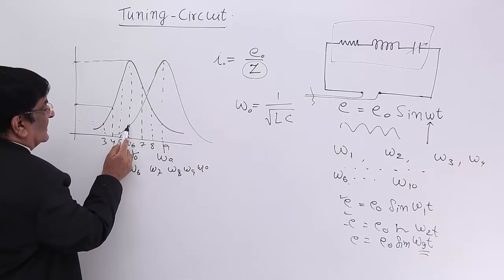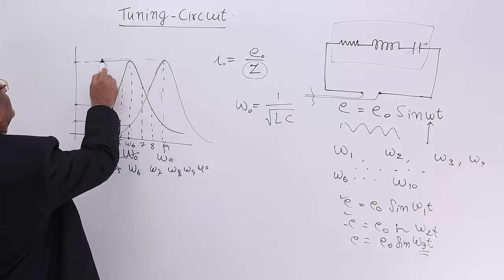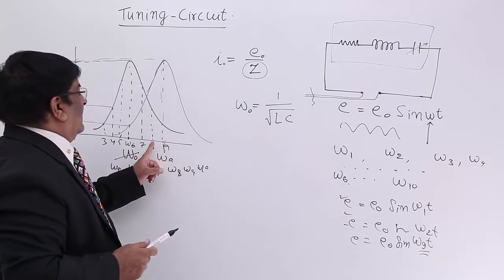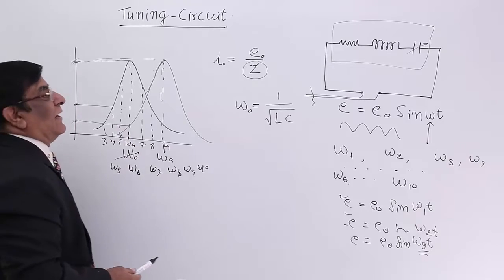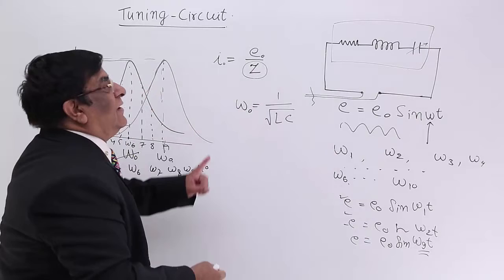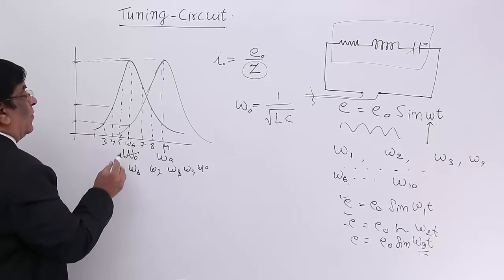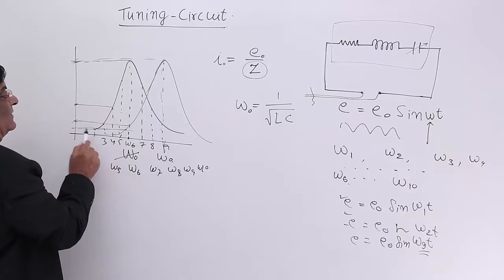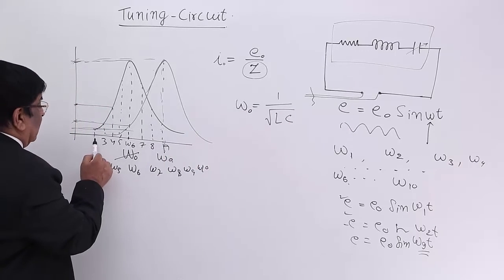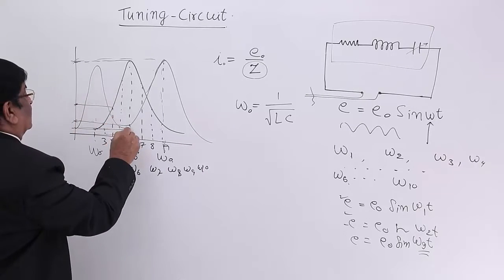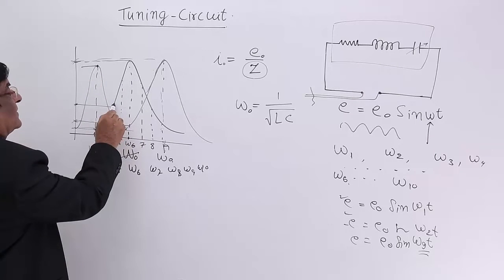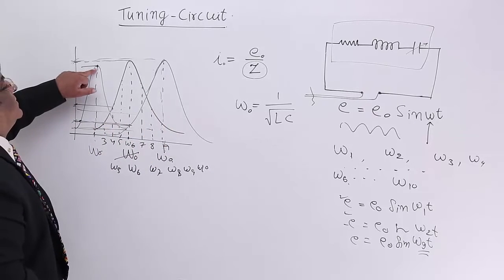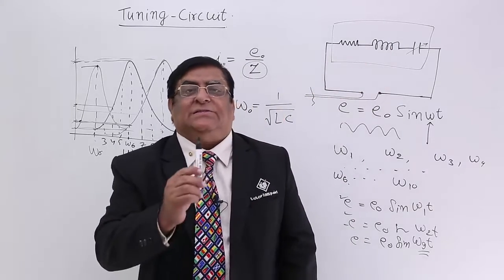Now the current for ω₉ is maximum, and for neighboring omegas it is progressively less. The old Star TV frequency is now giving only this much current. This is now Z TV giving the maximum current. So what do I see now? Z TV. Because I have tuned with the Z TV frequency. I don't want to see this — I want to see Doordarshan. Again I change C through my remote, so that ω₀ equals ω₂. When I set the natural frequency there, my curve shifts. I get maximum current for ω₂, and for Star TV, Z TV, and the other frequencies the current is very small. So this current is maximum, this makes maximum power, and I see Doordarshan. This is the principle of tuning.